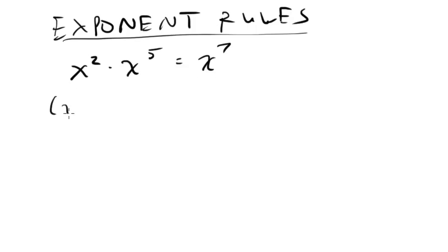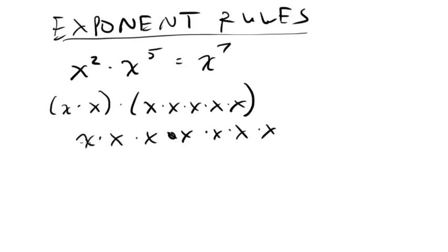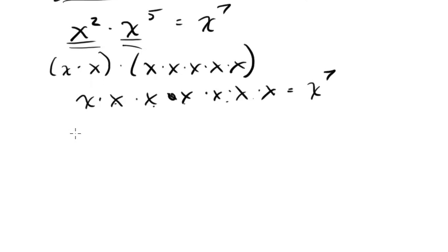Why do we do that? x to the 2 is just x times x, and x to the 5 is x times x times x times x times x. We can combine all of these together and count them up — we get 7 x's — so this is x to the 7th. The shortcut is: when you multiply exponents with the same base, you add the exponents. The general formula is: x to the a times x to the b equals x to the a plus b.